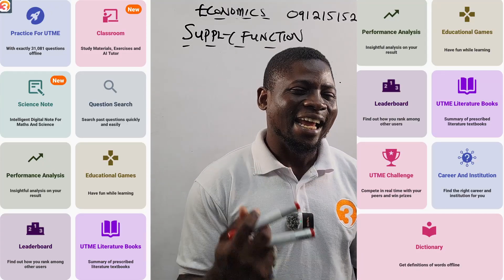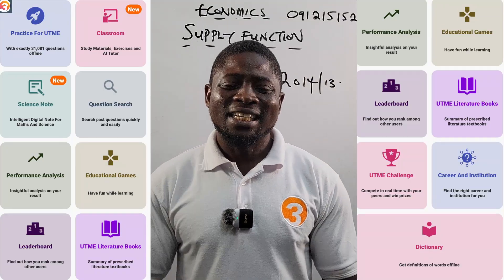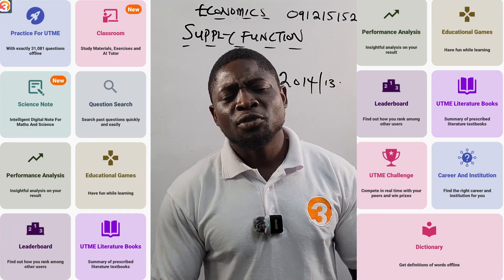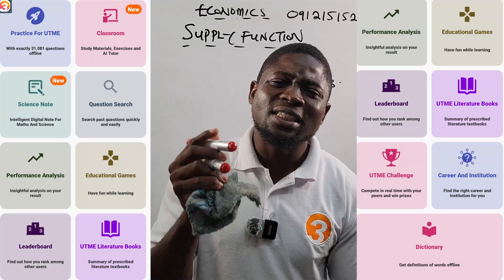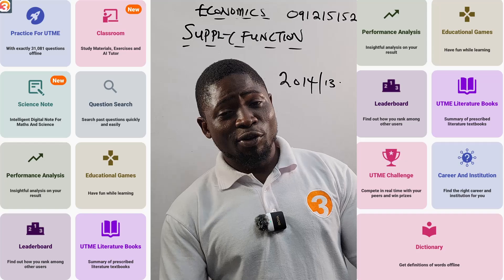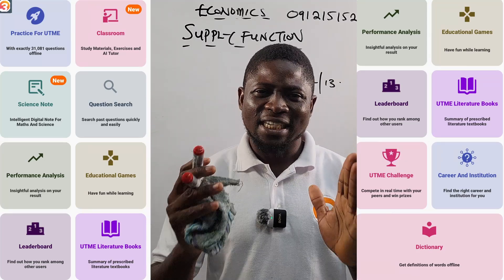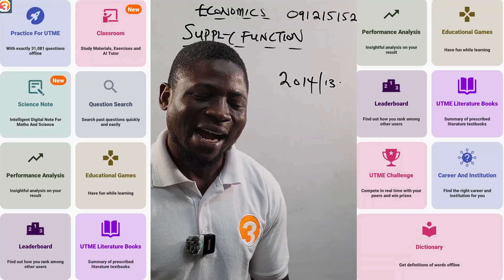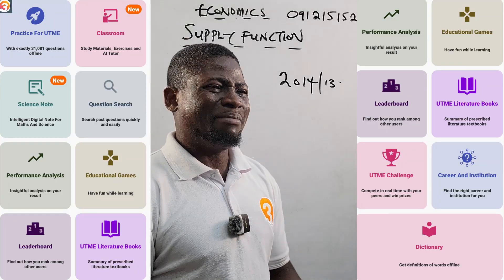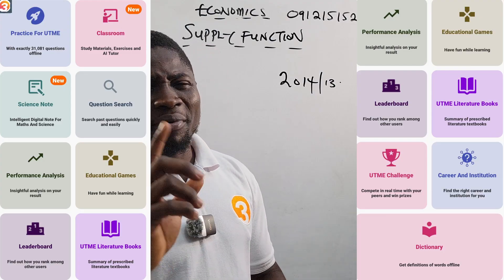There is a mock UTME challenge conducted for all students writing JAMB this year — every Saturday. After you have read for a week, you must come to the app to participate in the mock exam. In that mock exam you get JAMB past questions and likely exam questions. You also familiarize yourself with how JAMB sets questions, and you'll see your result displayed — whether you scored 180, 200, or higher out of 400 — shown exactly the way JAMB shows it, so you can track your progress toward the main JAMB exam.